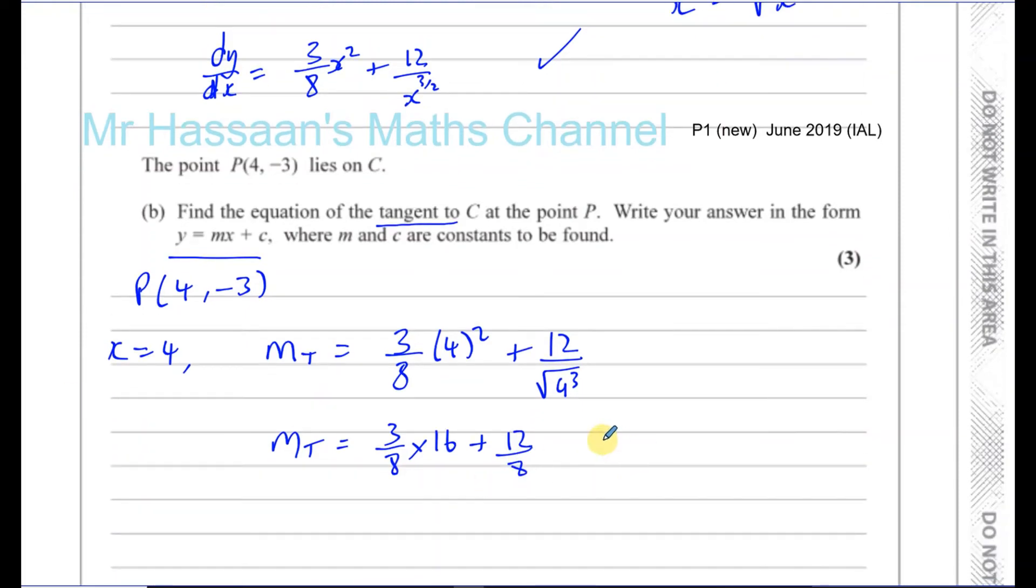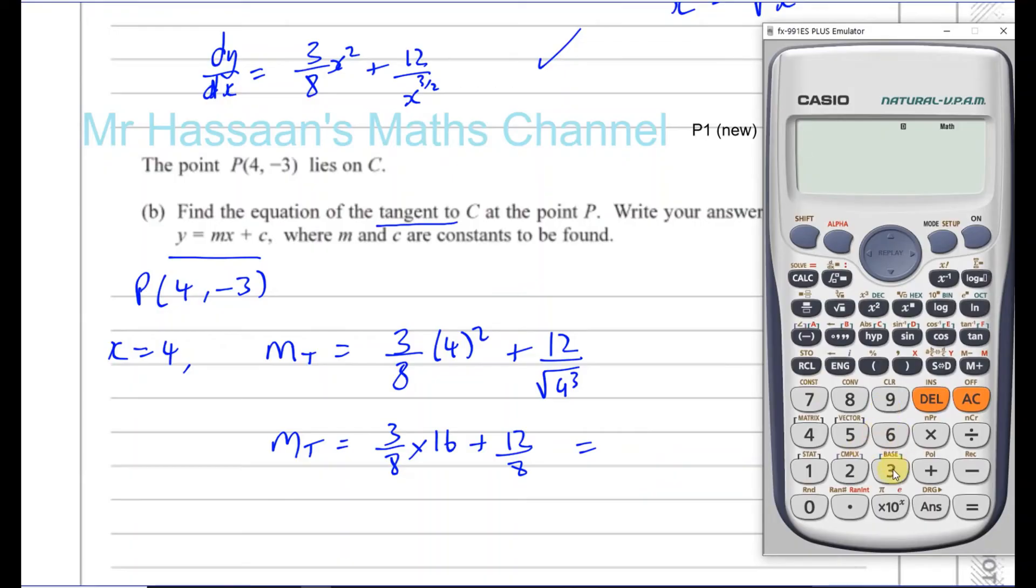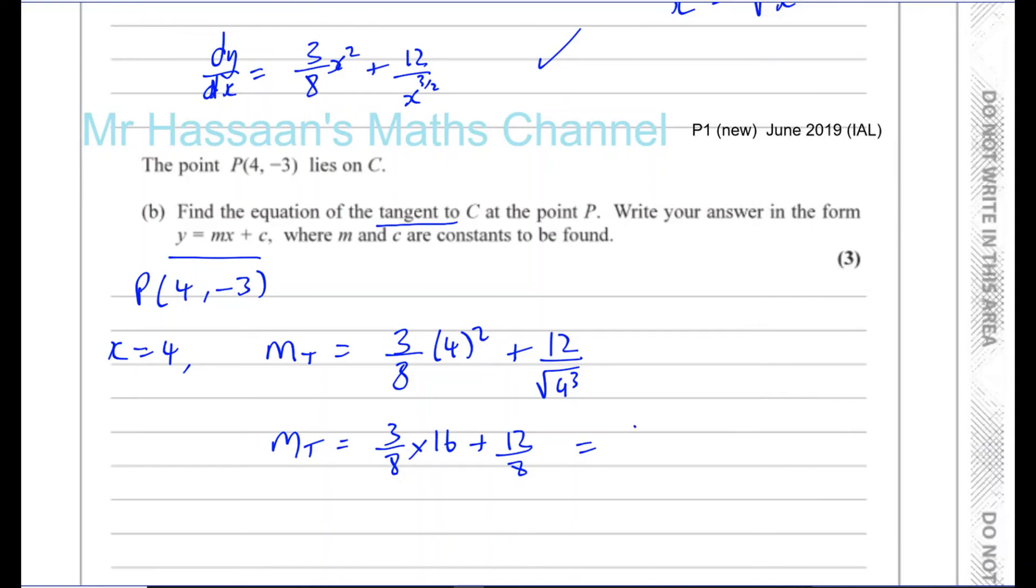So this will give you 3/8 times 16 plus 12 over. Now the square root of 4 is 2 and 2³ is 8. So that's 12 over 8. So this, if you calculate the value of this, it will give you 3/8 times 16, that's going to give you 2 times 3, 6 plus 12 over 8, which is 15/2. So 15/2 is the gradient of the tangent of the curve at the point P.